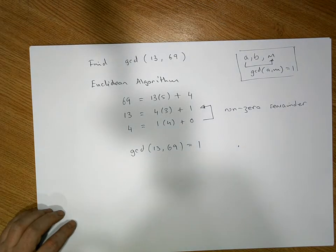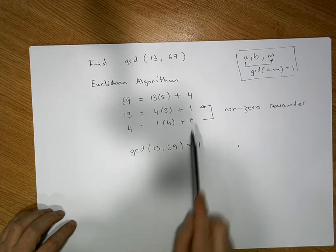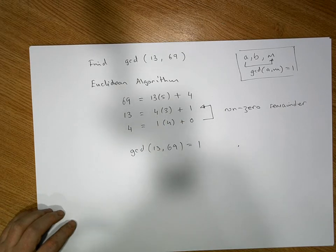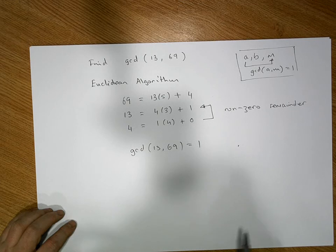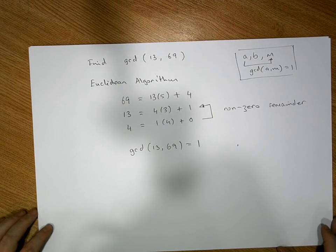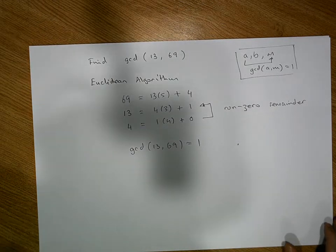In the next video we look at calculating the greatest common divisor of two numbers where the GCD is not equal to one — where the numbers are not relatively prime to each other. This was Jonathan Lambert with the Mathematics Development and Support Service at the National College of Ireland. I hope this video was helpful.